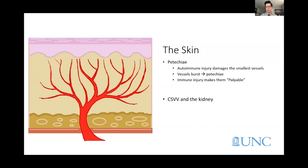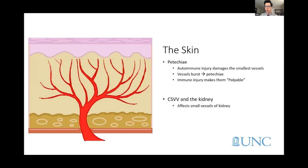As a quick review: small vessel vasculitis is autoimmune injury to the tiniest blood vessels. The vessels burst and result in petechia most of the time, although urticarial presentations can happen. Immune injury makes them palpable — we can feel them. Small vessel vasculitis can sometimes affect the kidneys, manifesting as blood or protein in the urine, which is why doctors check the urine.